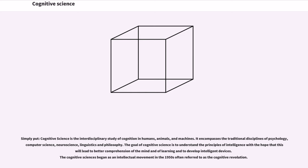Simply put, cognitive science is the interdisciplinary study of cognition in humans, animals, and machines. It encompasses the traditional disciplines of psychology, computer science, neuroscience, linguistics and philosophy. The goal is to understand the principles of intelligence with the hope that this will lead to better comprehension of the mind and of learning and to develop intelligent devices. The cognitive sciences began as an intellectual movement in the 1950s often referred to as the cognitive revolution.